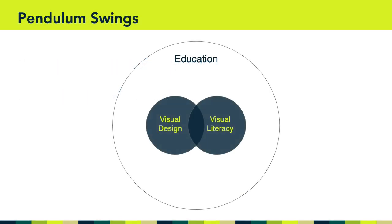As we've done before, we're going to swing the pendulum over to the visual literacy side of our Venn diagram. More specifically, we're going to talk about: one, concepts about graphics; two, notions of pictorial competence; and three, the functions of pictures in text. Now, in order to do all of that, I want to set things up by talking about concepts about print.